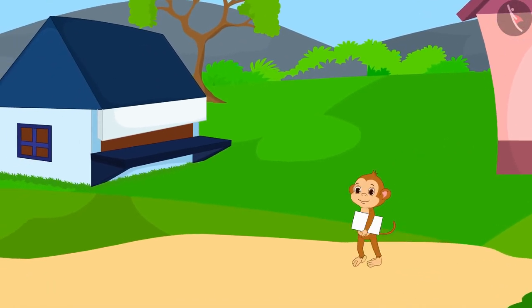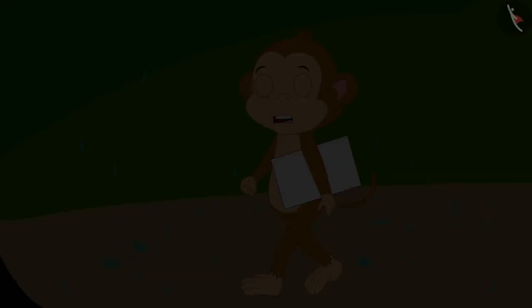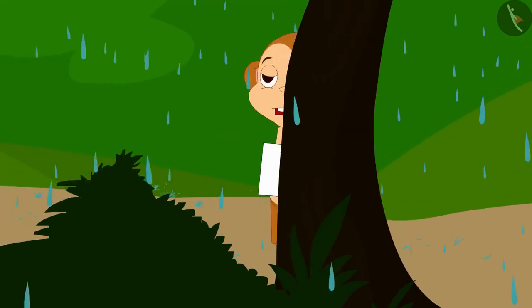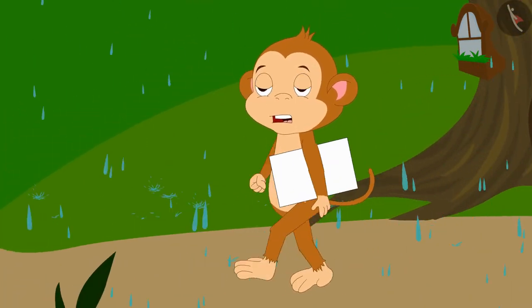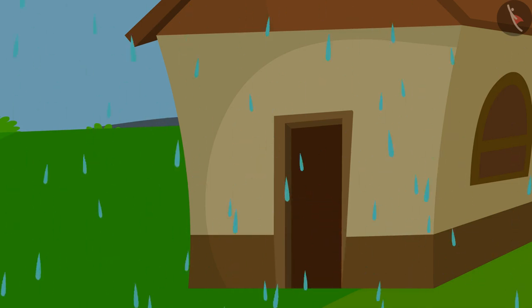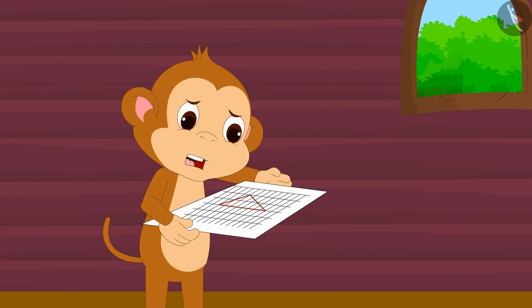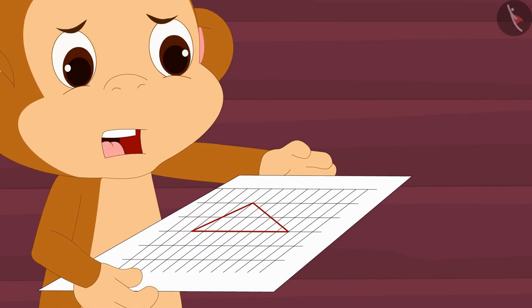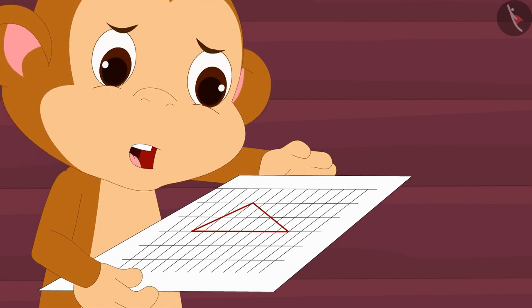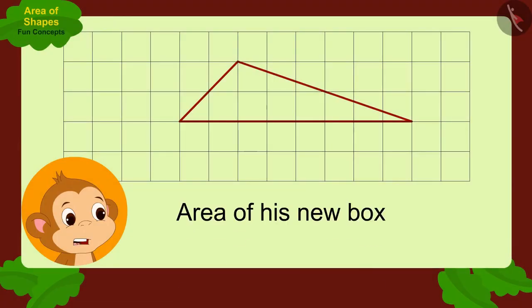Babban took the paper from Appu and was returning home when suddenly it started raining heavily. Babban arrived at his house with great difficulty and was completely drenched. Oh god, what is this! Two lines from the design of Appu's new box have been rubbed off because the paper got wet in the rain.